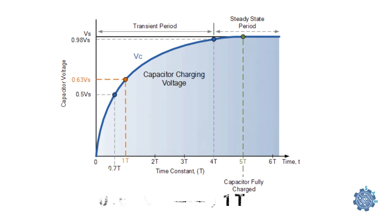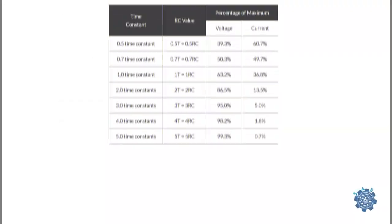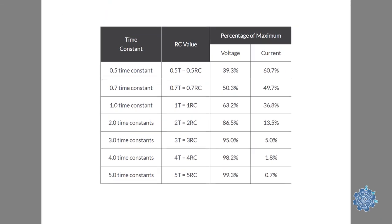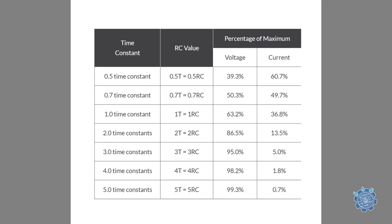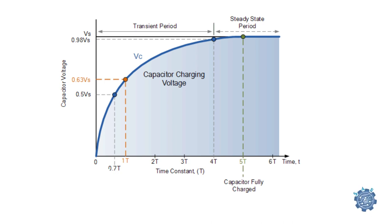We can see in the next table the values of voltage and current depending on the time constant. Notice that the charging curve for an RC charging circuit is exponential and not linear. This means that in reality the capacitor never reaches 100% fully charged. So for all practical purposes, after 5 time constants it reaches 99.3% charge, so at this point the capacitor is considered to be fully charged.